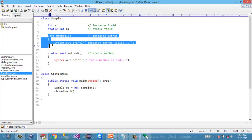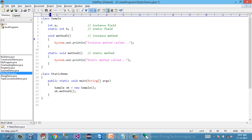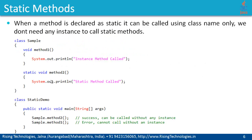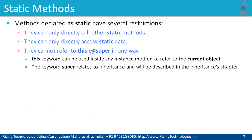But from an instance method, I can access static fields as well as instance fields. That means within method one, I can access 'a' as well as 'b'. I can even call method two from method one. There is one more restriction on static methods: they cannot refer to 'this' or 'super' in any way. The 'this' keyword can be used inside any instance method to refer to the current object that has invoked that method. The 'super' keyword relates to inheritance and will be described in the inheritance chapter. So we cannot use these two keywords within method two, but we can use them within method one because method one belongs to a specific instance.